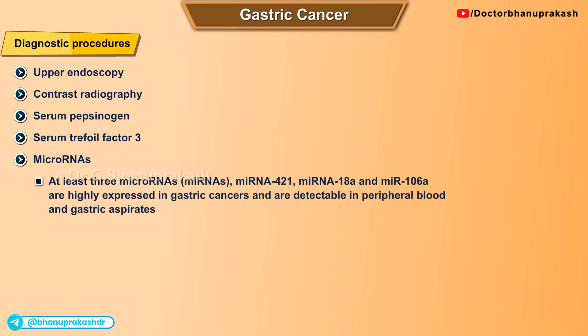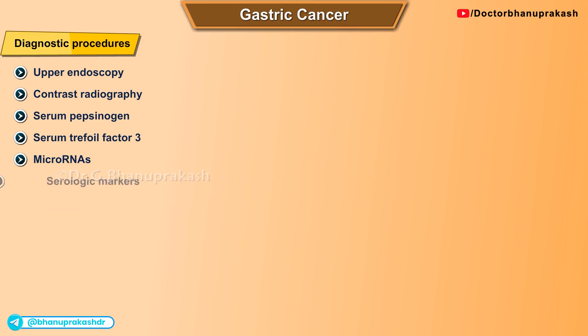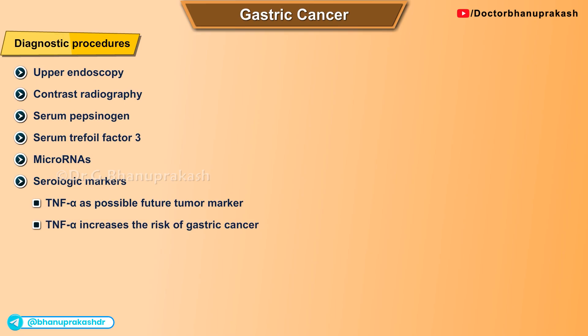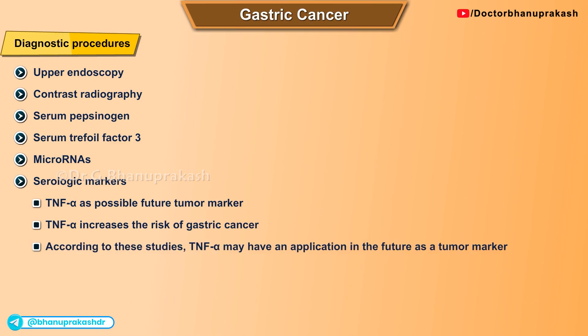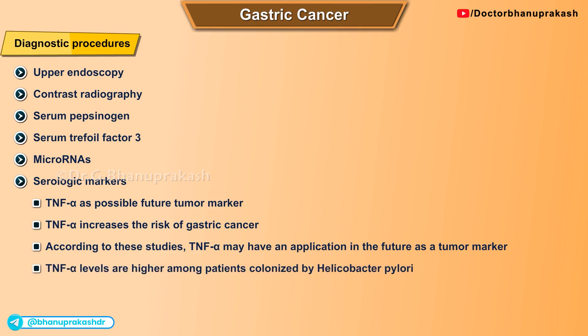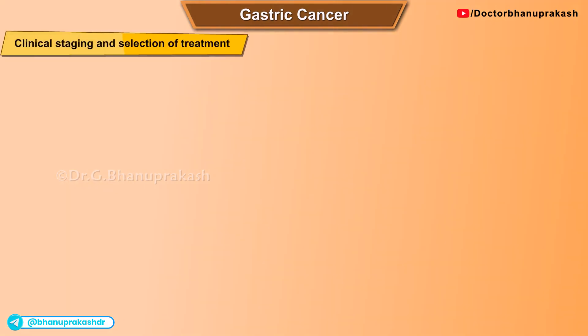At least three microRNAs — miR-421, miR-18a, and miR-106a — are highly expressed in gastric cancers and are detectable in peripheral blood and gastric aspirates. Regarding serological markers, tumor necrosis factor alpha has been proposed as a possible future tumor marker. Some studies suggest TNF-alpha increases gastric cancer risk and may have future application as a tumor marker. TNF-alpha levels are higher among patients colonized by H. pylori, though the clinical significance has not been fully established.